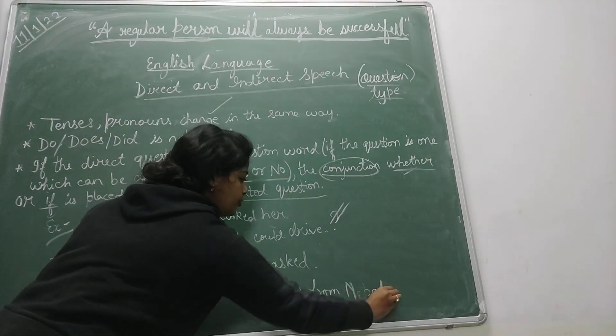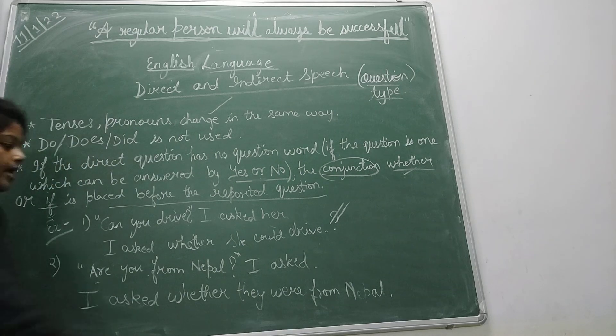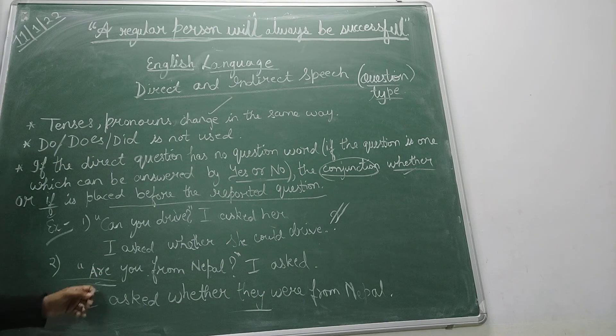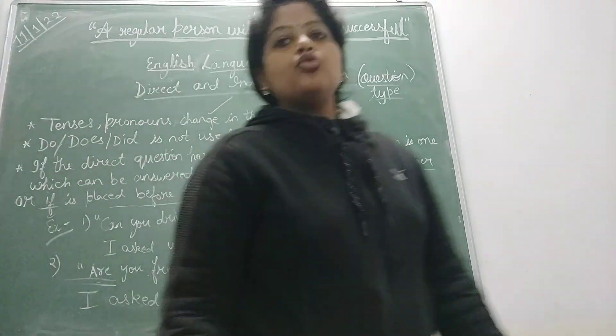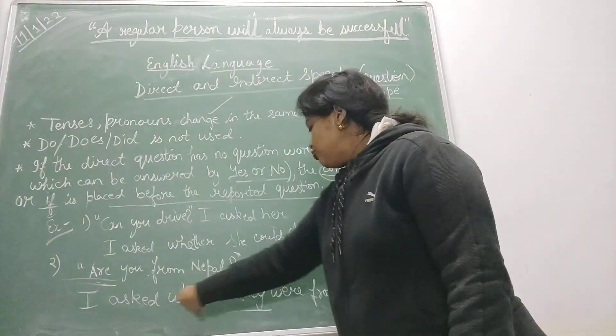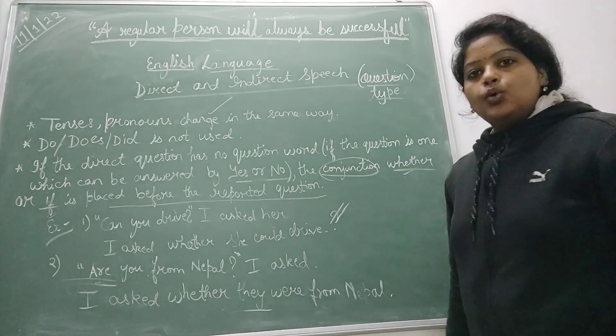And at last, they were from Nepal. So why am I saying they over here? Because over here are is used, so means over here it's a plural form. That's why I am using they. So I asked whether they were from Nepal. One more thing that needs to be remembered.